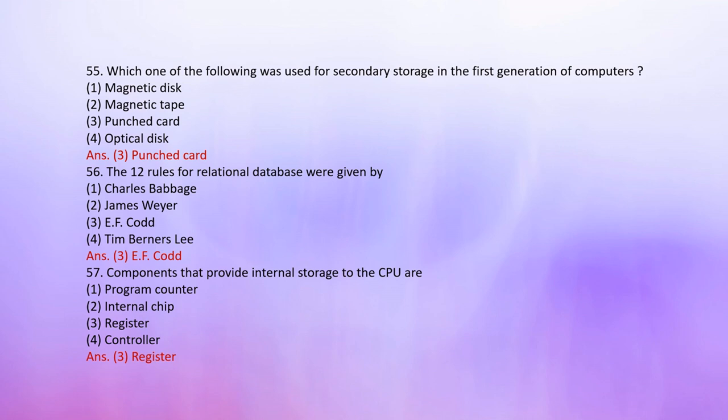Number 56: The 12 rules for relational databases were given by — 1. Charles Puppets, 2. James Webb, 3. E.F. Codd, 4. Tim Berners-Lee. The correct answer is 3: E.F. Codd.